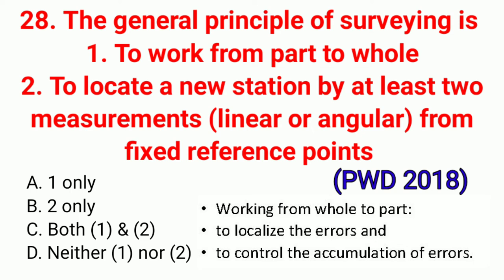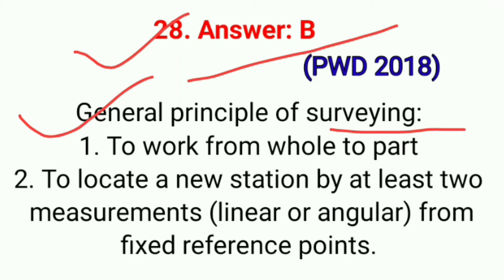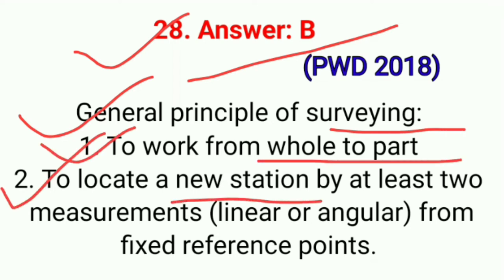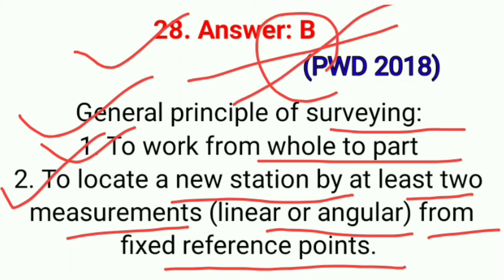Question No. 28. The general principles of surveying are: first, to work from part to whole; second, to locate a new station by at least two measurements, linear or angular, from fixed reference points. Correct option B: Second only. The correct general principle of surveying is: first, to work from whole to part; second, to locate a new station by at least two measurements, linear or angular, from fixed reference points. Correct option B.